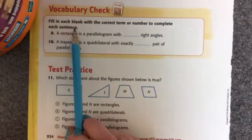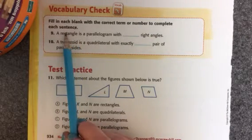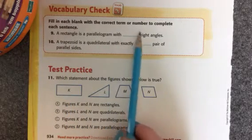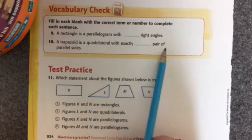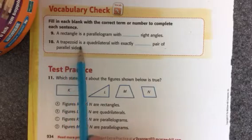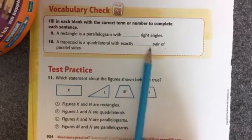Fill in each blank with the correct term or number to complete each sentence. A rectangle is a parallelogram with how many right angles? A trapezoid is a quadrilateral with exactly how many pair of parallel sides?